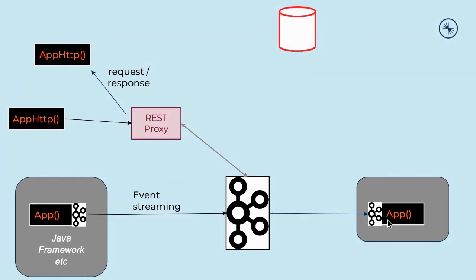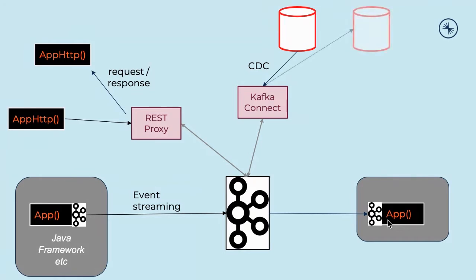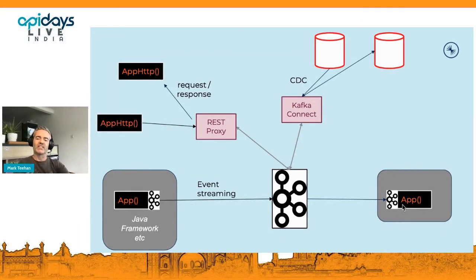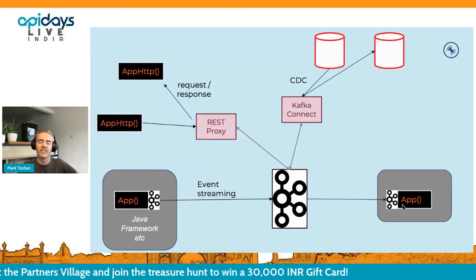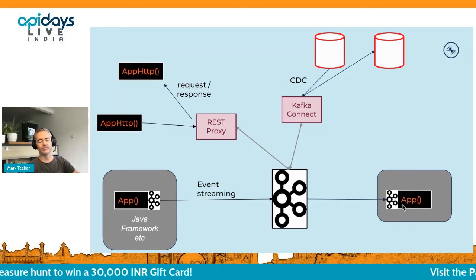The third common pattern for communicating with the Kafka system is using other data stores in the organization, commonly databases. In this case, often we want to do CDC, and the pattern of choice here is Kafka Connect. Kafka Connect was released about five years after the Kafka brokers. It solves the problem of ETL in real time for Kafka systems. Kafka Connect is a framework that connects to a wide variety of source and sync systems, converting whatever the data access pattern is into Kafka produce and consume commands.